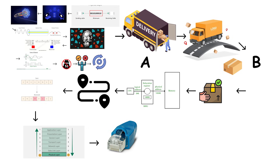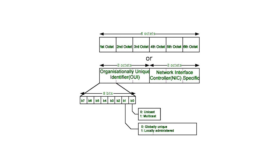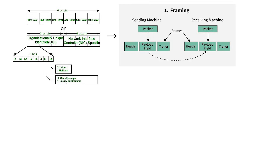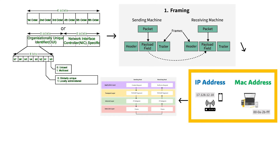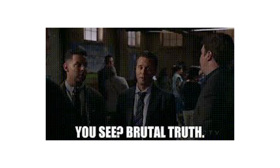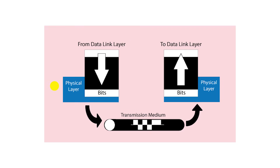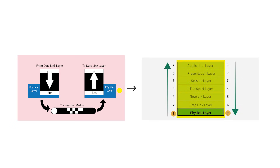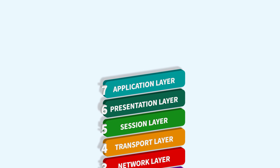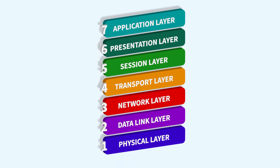Level 1 people will brag about knowing RJ45 connectors and network interface cards. Cool, you know the hardware. But you have zero concept of MAC addresses added by the data link layer, or IP addresses added by the network layer, or how TCP and the transport layer make sure your data arrives in the correct order. You just see cables and think that's the whole story. When you load a website, the physical layer sends signals out and the server's physical layer receives them and converts them back to bits. Then those bits travel up through all 7 layers to become the web page you see. If you started learning the OSI model today, you'd surpass everyone at level 1 in about an hour.